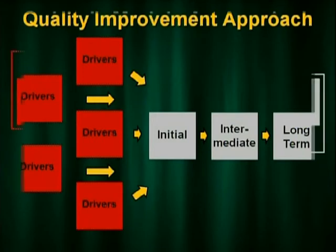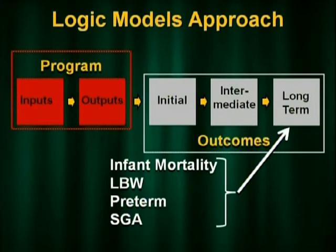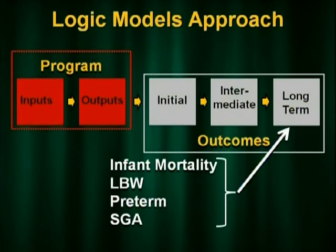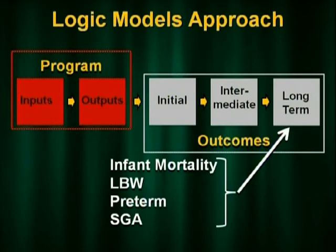Infant mortality, low birth weight, preterm birth, and small for gestational age really end up being what I call long-term outcomes. With many of your programs, you may not have the power to see a measurable difference in these outcomes. But if we understand that chain of events from the initial to the intermediate to the long-term outcomes, maybe we don't even have to measure to document the long-term change. If we can document that interaction from one level to the next, we only need to show changes on the initial and intermediate outcomes, where those are frequently better measured.